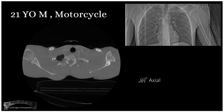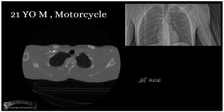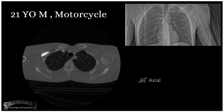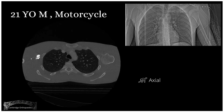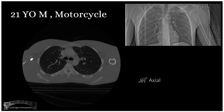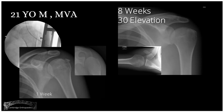A 21-year-old gets knocked off a motorcycle and sustains this injury. What do you see? What do you think might be injured? How would you classify it? It's a near two-part anterior fracture dislocation with a fracture of the greater tuberosity. He gets reduced in theatre and here are his radiographs at one week and eight weeks, showing healing of the greater tuberosity, but he is unable to elevate his arm past 30 degrees. What is your differential?